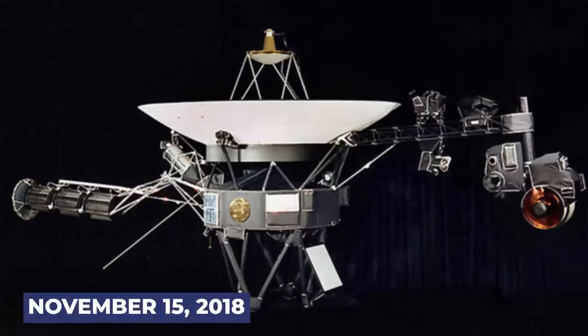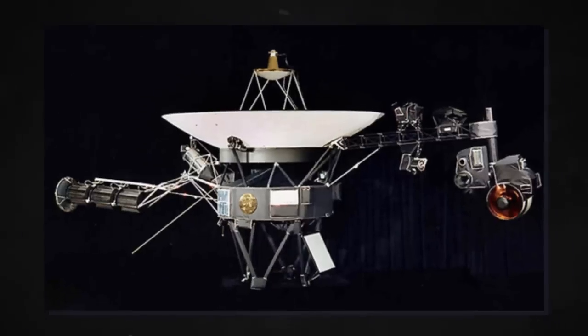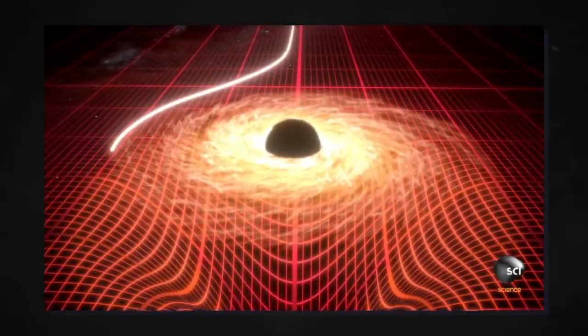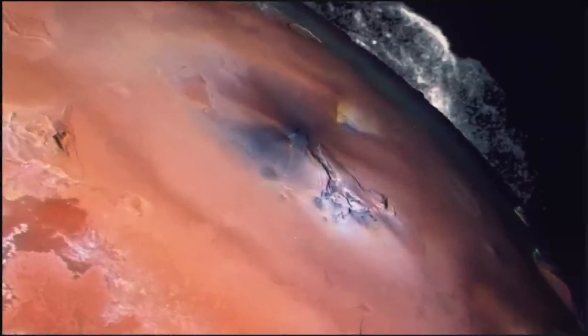On November 15, 2018, Voyager 2 reached another significant milestone. It successfully crossed the heliopause. This time, there was no discrepancy as its plasma instrument was still functioning optimally. Hence, it was able to record a significant increase in particle density.